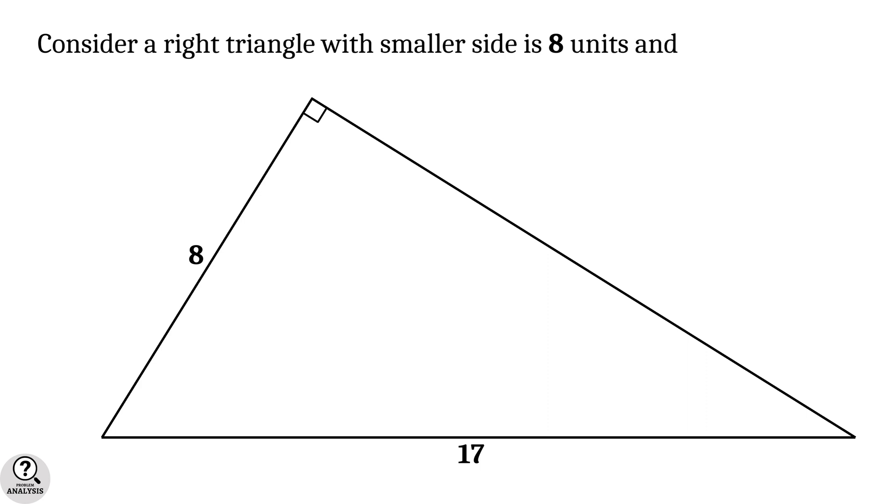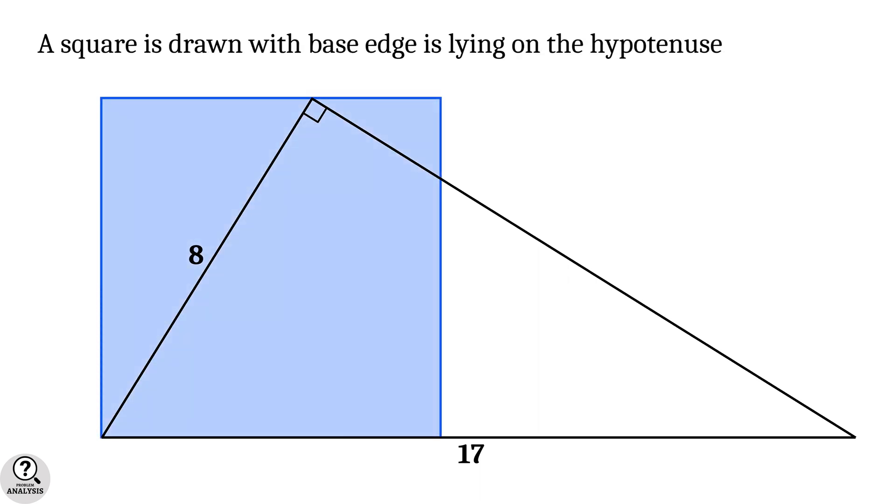Consider a right triangle with smaller side is 8 units and the hypotenuse is 17 units. A square is drawn with base edges lying on the hypotenuse and its opposite edge is passing through the right angle corner.